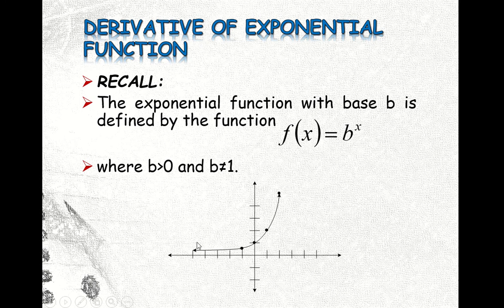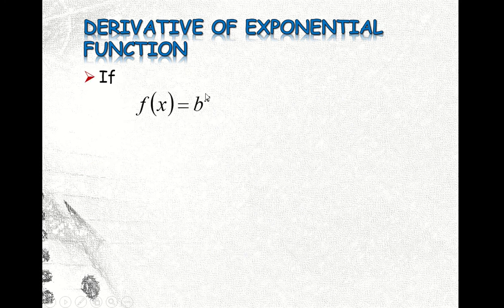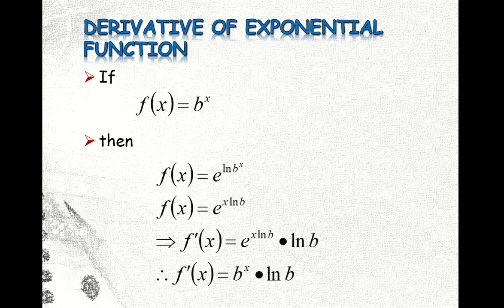If you graph this function, we will see an exponential graph. Now if f of x equals b to the x, then this function can be written as f of x equal to e to the ln b to the power x. And from algebra, we can write this as f of x equal to e to the power x times ln b.